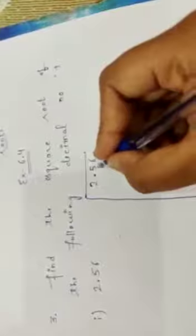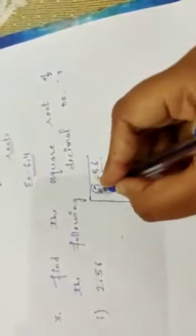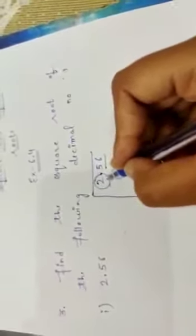In that method our first step was to make its pairs. So let's make pairs from the last. This one and this. Now our next step was to check whether this number is a perfect square or not. If it is not a perfect square then we have to find out which perfect square number it's coming around.